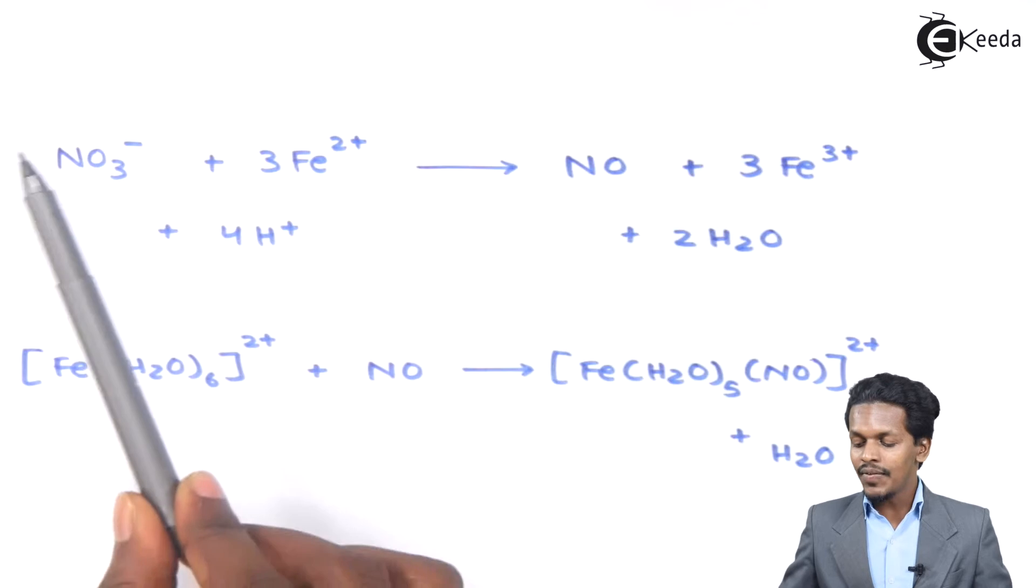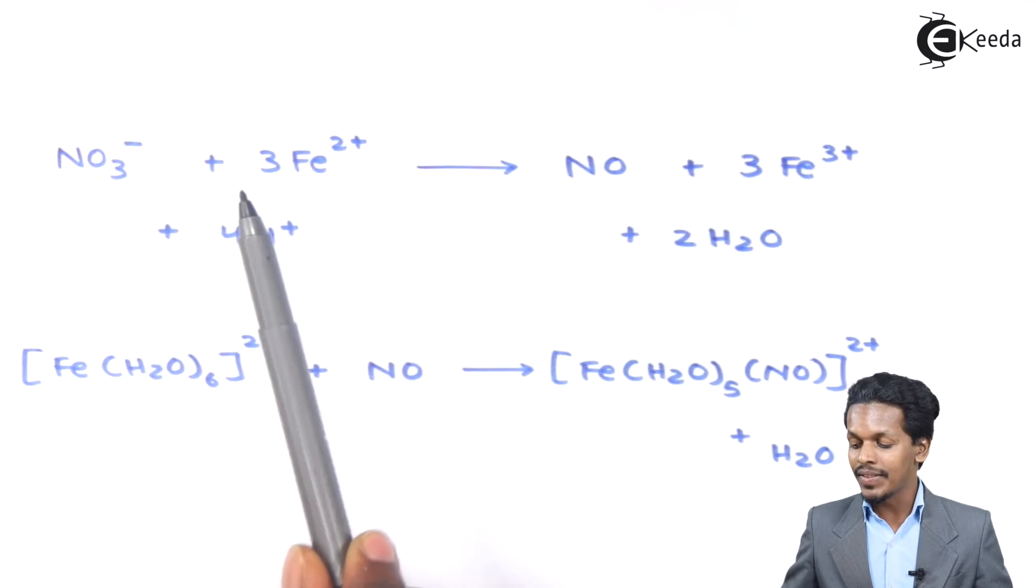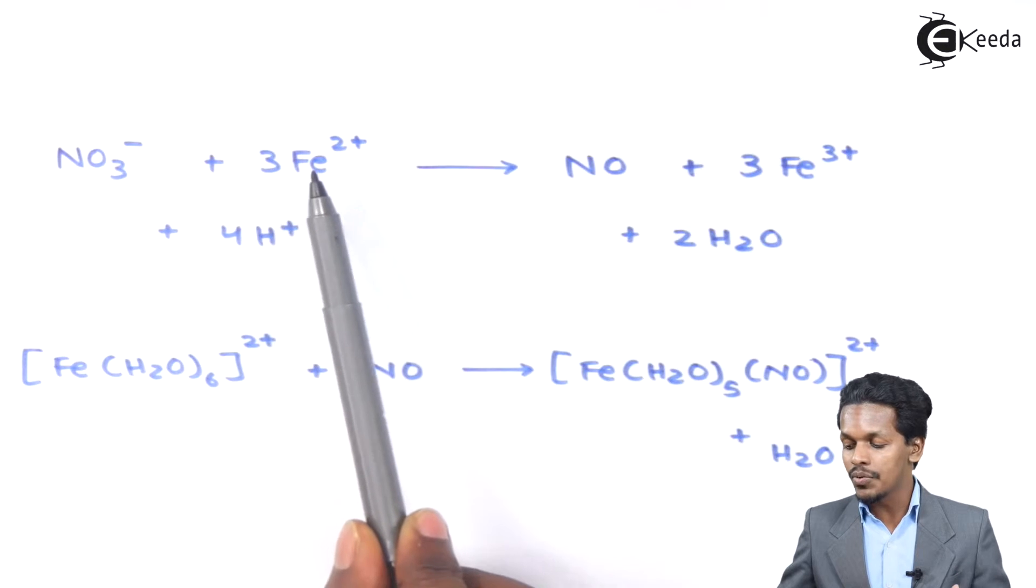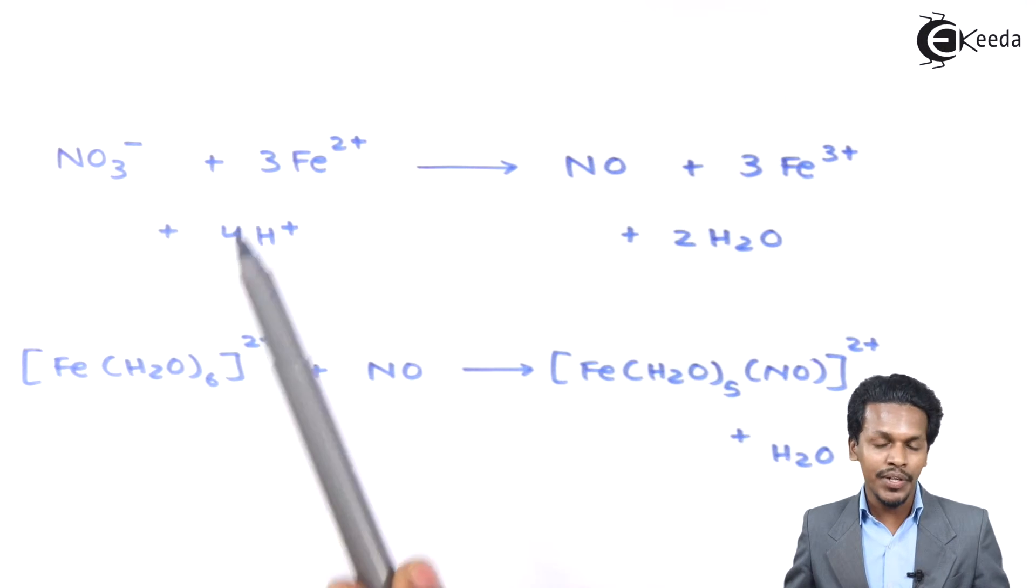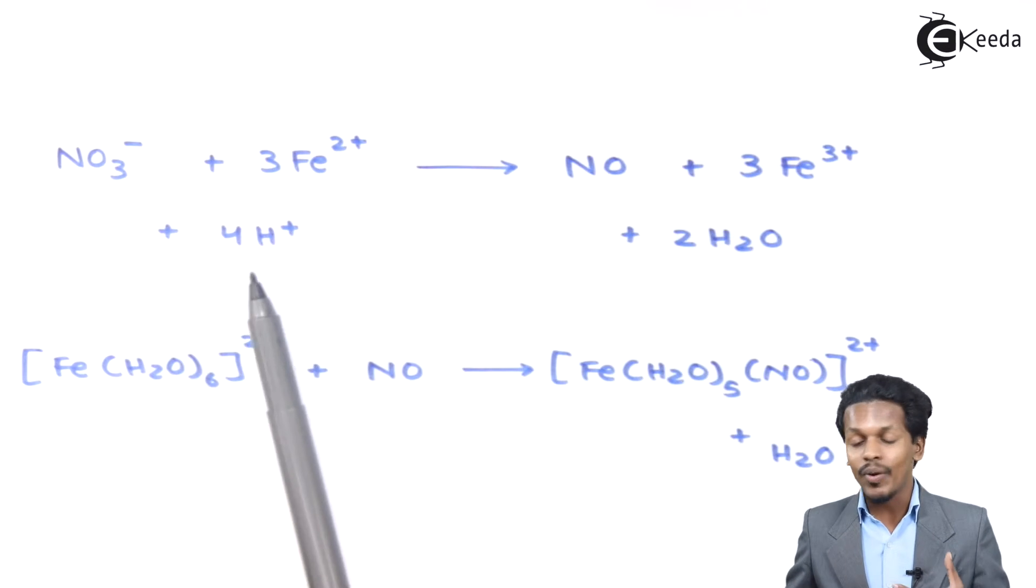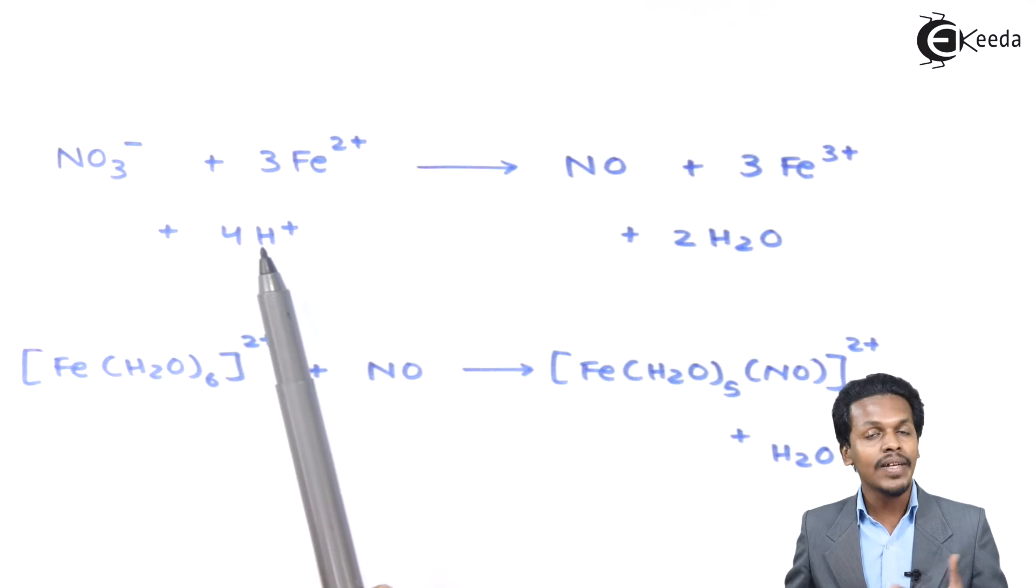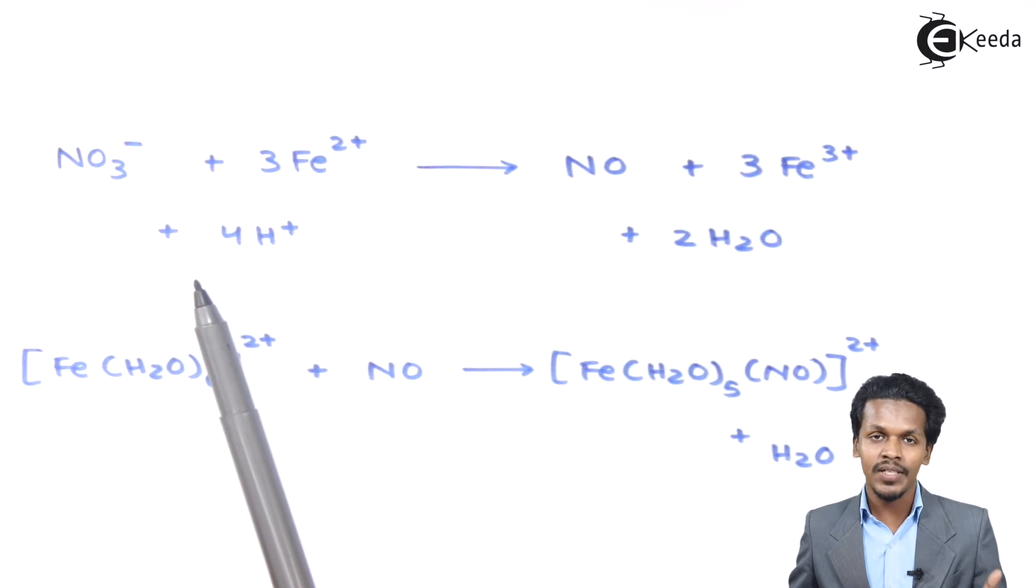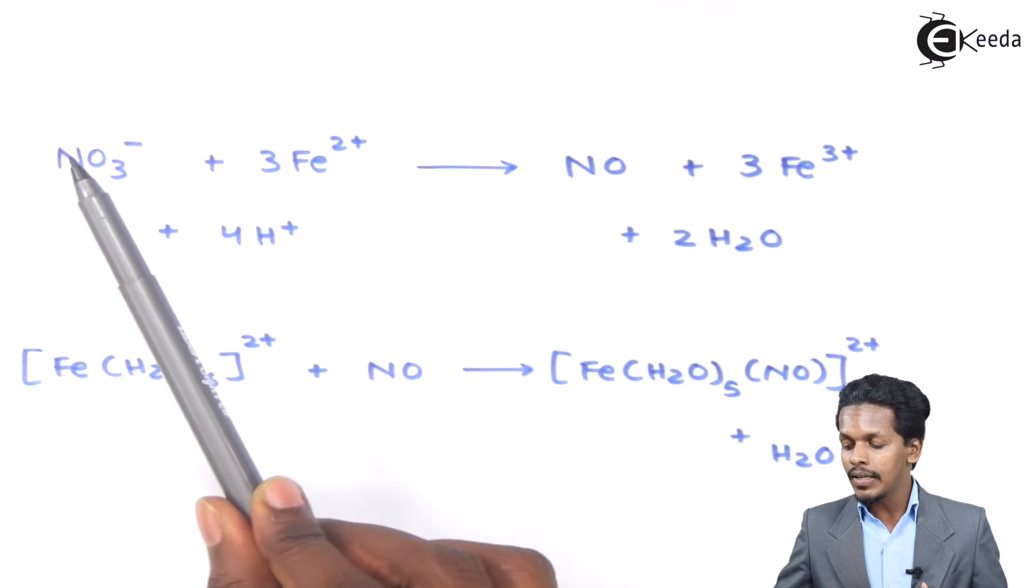The reaction is as follows. Here we can see the presence of NO3 minus, the nitrate ion. Along with that, we introduce 3 moles of Fe2+, which is ferrous sulfate solution. Along with that, we add sulfuric acid, so we have 4 moles of H+ ions obtained from the sulfuric acid or other acids.